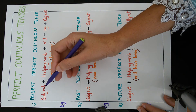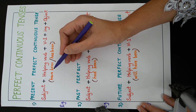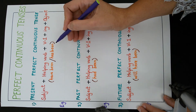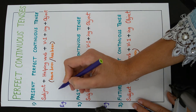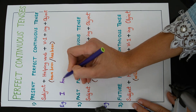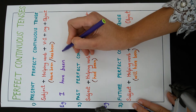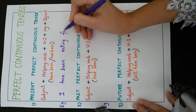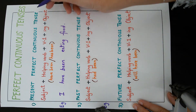If the subject is I, you, we, or they, 'have been' will be used. If the subject is he, she, or it, 'has been' will be used. Using the subject 'I', the sentence is: I have been eating food. This sentence is in present perfect continuous tense.